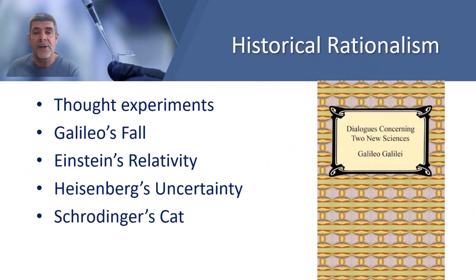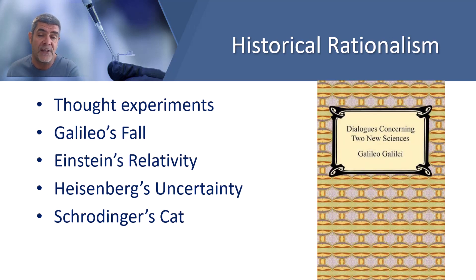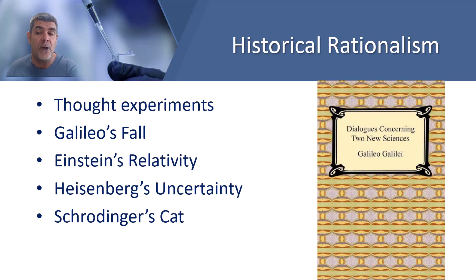When we look at historical rationalism, thought experiments are typical examples of rationalism in science. In thought experiments, scientists develop their ideas from first principles without necessarily conducting physical experiments. They rely on logic, rational reasoning, a vivid imagination, and a deep understanding of established principles to derive scientific explanations. One example is Galileo's disproving of the Aristotelian view that heavy objects fall faster than lighter objects — done with a thought experiment.